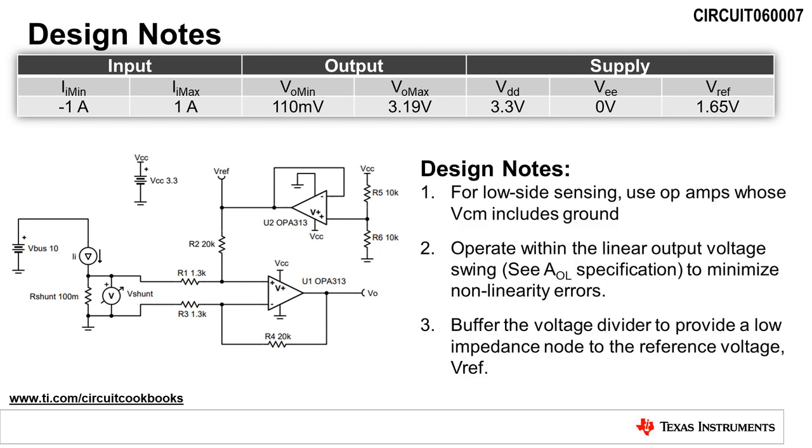When designing a low side bi-directional current sensing amplifier circuit, there are a few design notes to be aware of. First, be sure to use an op amp whose common mode voltage, or VCM, includes ground. Next, be sure to always check the linear output swing of the amplifier, which is usually given in the Conditions column of the AOL, or Open Loop Gain, data sheet specification. Finally, be sure to buffer the voltage divider to provide a low impedance node to the reference voltage, VREF.